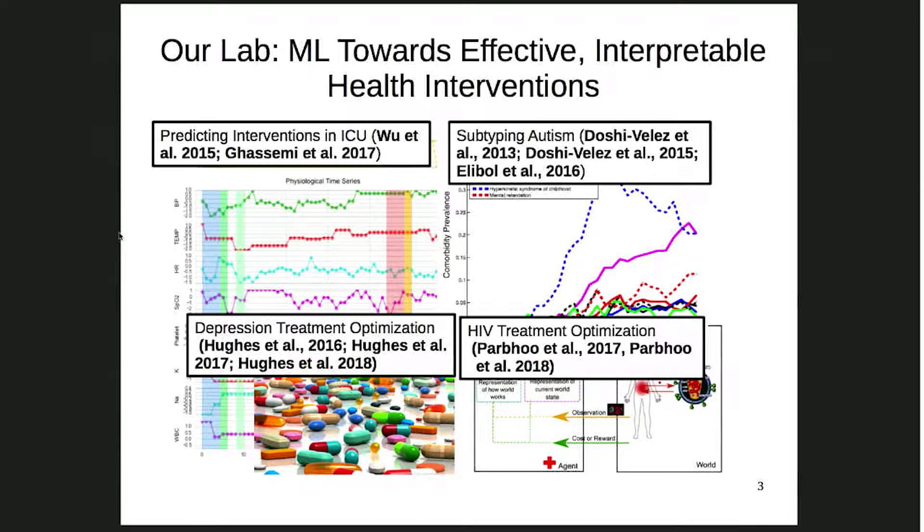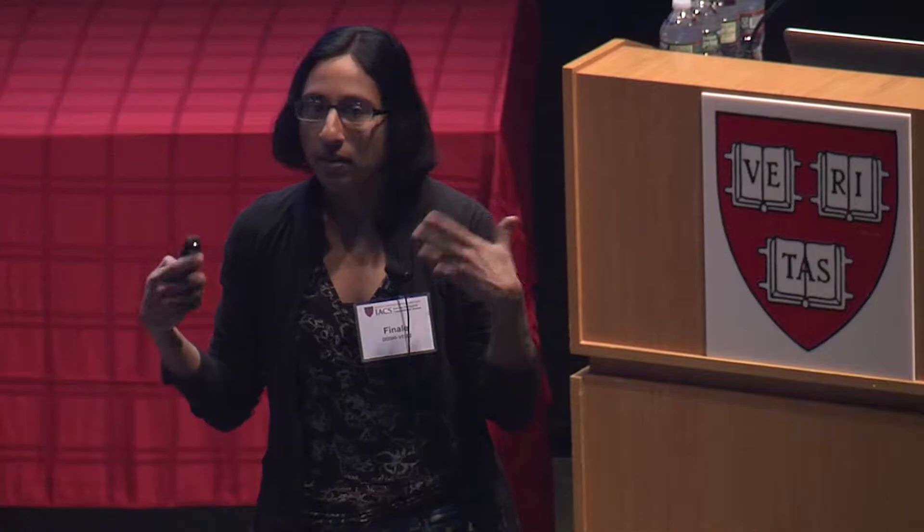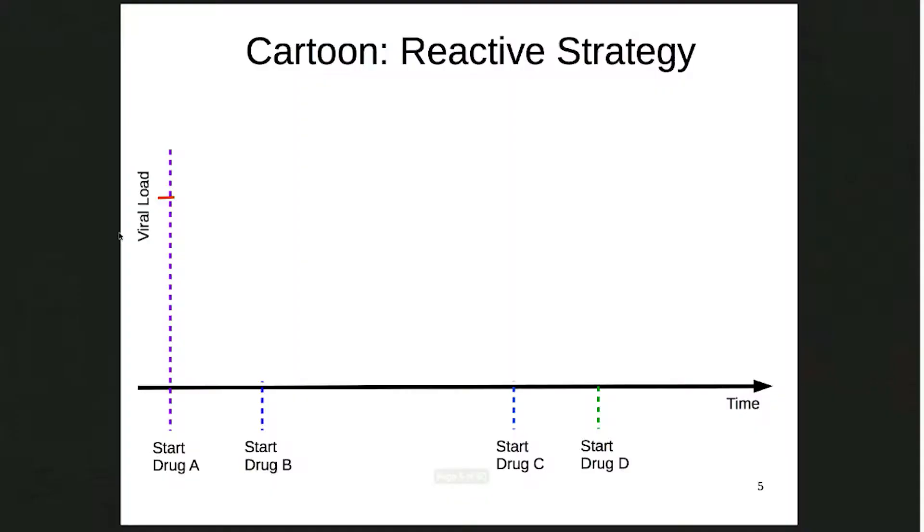HIV affects about 36 million people worldwide. It requires lifelong treatment with antiretroviral drugs, and the tricky thing about HIV is that you develop resistance to the drug over time — so you have to keep switching the drugs. That means we have to reason about the sequence of treatments we're giving to these patients.